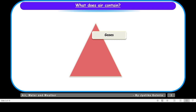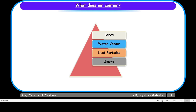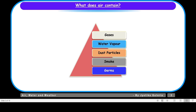We know that air contains different gases, water vapor, dust particles, smoke and germs as well. Now we will talk about these different constituents of air one by one. So first we have gases. Air contains many gases such as nitrogen, oxygen and carbon dioxide. We know that we breathe in oxygen from the air and we breathe out carbon dioxide. Now let us know more about oxygen and nitrogen.